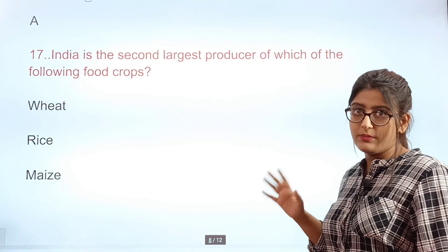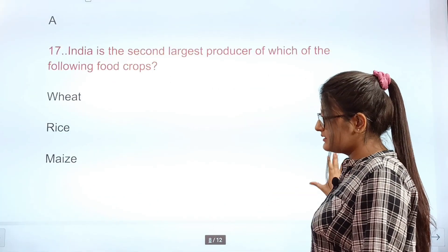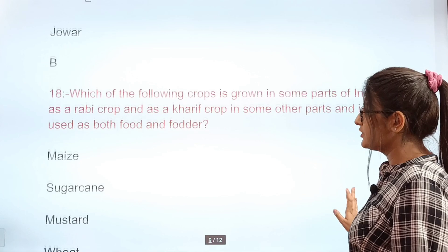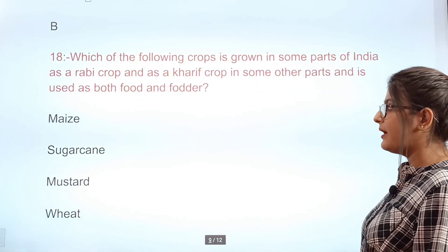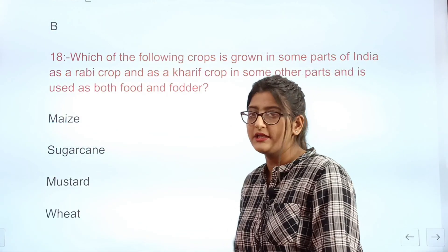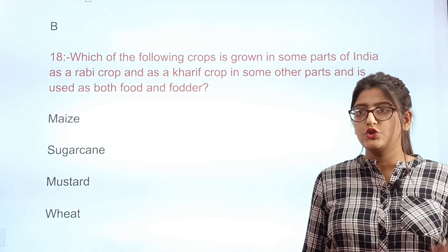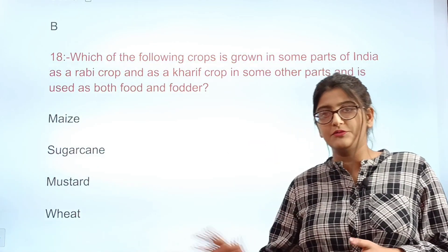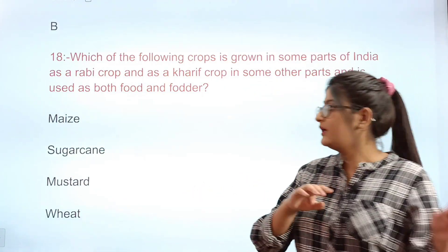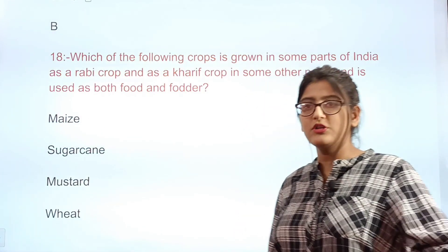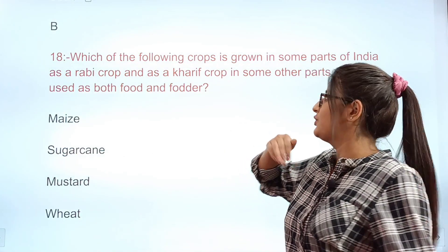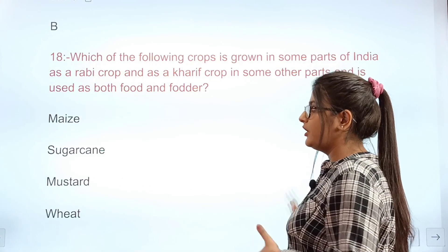Question 17: India is the second largest producer of which crop? Options: A wheat, B rice, C maize, D jowar. Question 18: Which crop is grown in some parts of India as a Rabi crop and in other parts as a Kharif crop, used as both food and fodder? Options: A maize, B sugarcane, C mustard, D wheat. The correct answer is A — maize. Corn is used in many varieties — boiled, popcorn — and serves as both food and fodder.